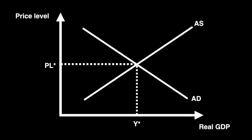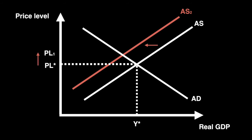As the price of oil rises, the cost of production for many firms will rise. As their costs rise, they scale back production and aggregate supply shifts leftward. The result is reduced output and a higher price level. This diagram demonstrates the impact of cost push inflation, which you should recognize from an earlier video on the interaction of aggregate demand and aggregate supply.